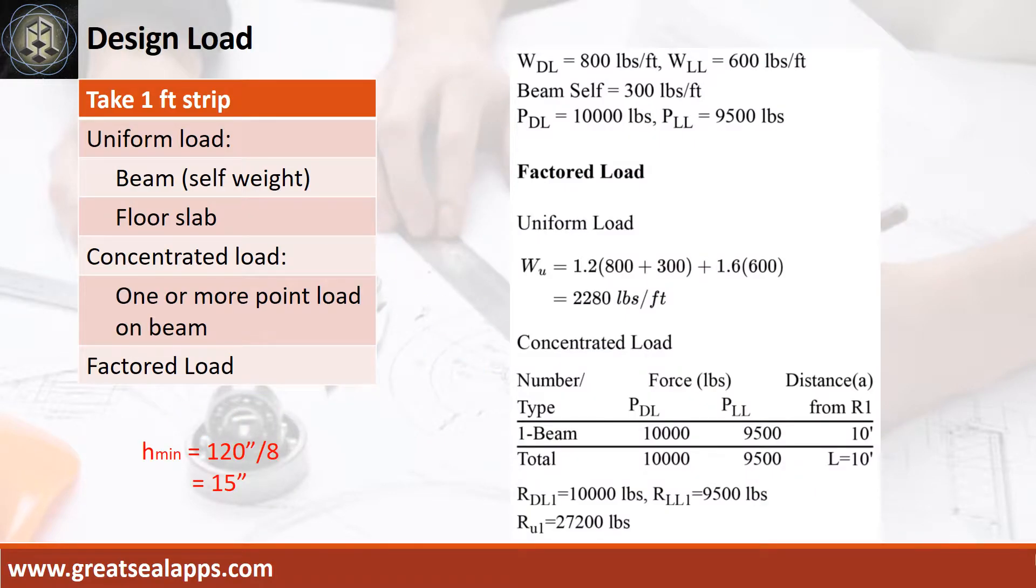The beam carries a uniform dead load of 800 pounds per foot and uniform live load of 600 pounds per foot. The beam self-weight is 300 pounds per foot for a factored uniform load of 2,280 pounds per foot. The beam also carries a concentrated dead load of 10,000 pounds and concentrated live load of 9,500 pounds, 10 feet away from support for a factored concentrated load of 27,200 pounds.